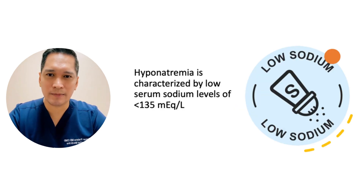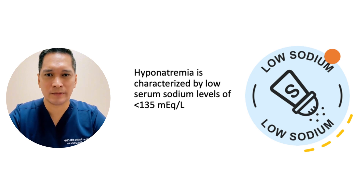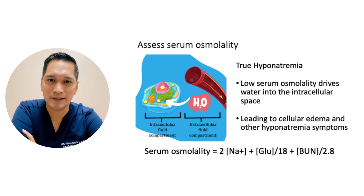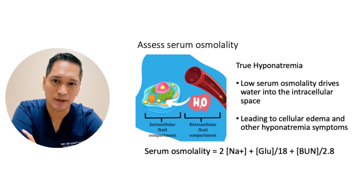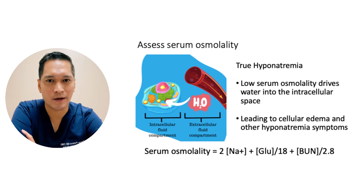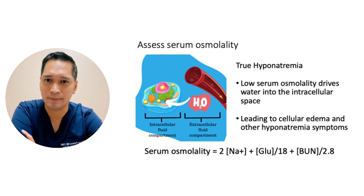Hypernatremia is characterized by a low serum sodium level of less than 135. When you encounter a hypernatremia case, ask yourself what is causing the low sodium. Evaluation begins with the measurement of serum osmolality. Serum osmolality equals 2 times sodium plus glucose over 18 plus BUN over 2.8. It is a quick calculation to remember for your exam, so please memorize this formula in order to rule out other osmols contributing to the hypernatremia.